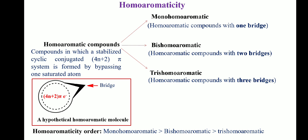Let us start with homoaromaticity. Homoaromaticity is a term used to describe systems in which a stabilized cyclic conjugated 4n+2 pi system is formed by bypassing one saturated atom. The saturated atom in the ring lies almost vertically to the plane of the sp2 atoms. This is also called bridged. A hypothetical homoaromatic molecule is shown here.